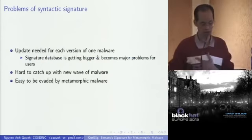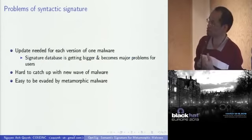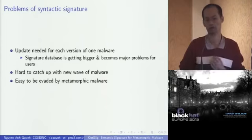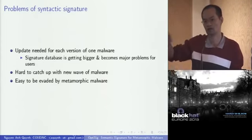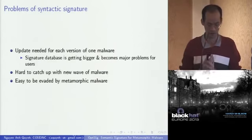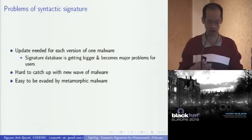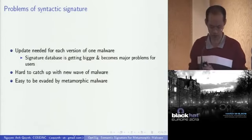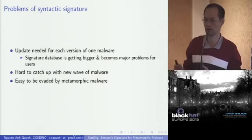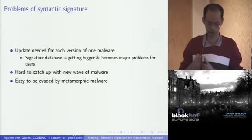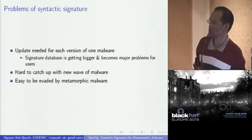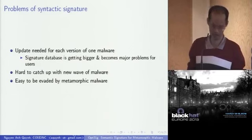However, all of these are still syntactic, and there are some problems. First, we need to update the signature for each version of a malware because malware can change itself when it infects. So each version needs one signature, and because there are so many malware, the signature database gets bigger and becomes a major issue for users. The other problem is it's very hard to catch up with new waves of malware. Finally, syntactic signatures are very easy to evade by metamorphic malware.